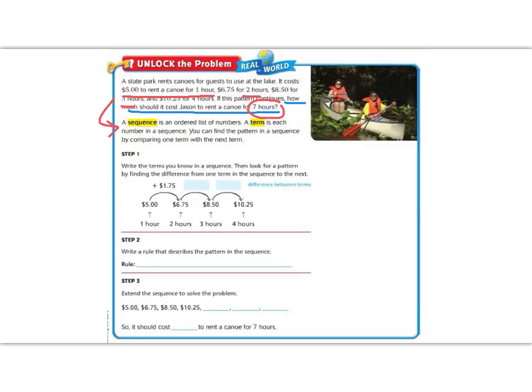So to solve this problem, we need to look at what we know about the first four hours. When we look at the difference between $5 for one hour and $6.75 for two hours, I can see that we've increased by 1.75. If I wasn't sure how I got that number, I could subtract to figure it out. So what if I have $6.75 minus $5? 5 minus 0 is 5, 7 minus 0 is 7, bring down the decimal, 6 minus 5 is 1. So the change was 1.75. So this is my rule, is that I'm going to add 1.75.